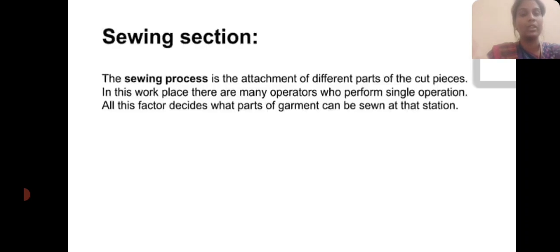Today we are discussing about sewing processing — the sewing section. The sewing processing is the attachment of different parts of the cut pieces. In the workplace, there are many operators who perform a single operation. Parts of the garment can be sewn at the section.